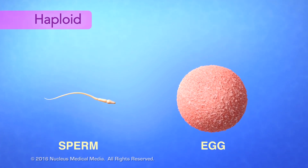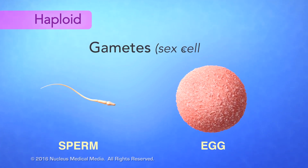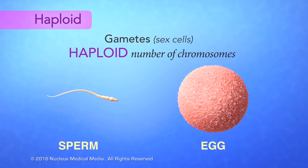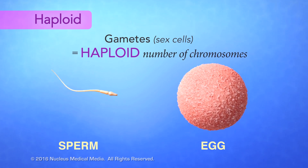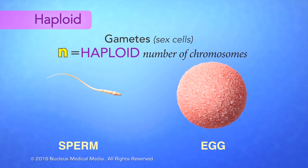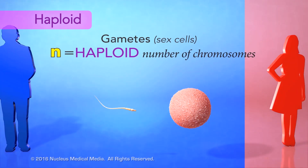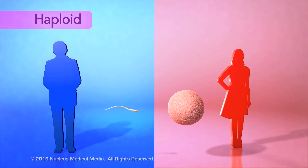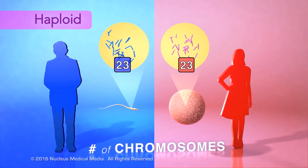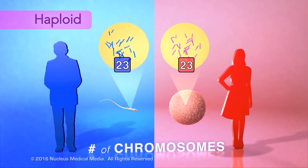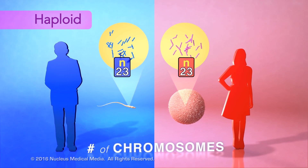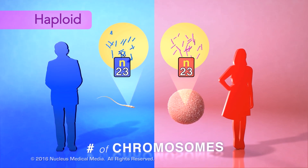In your body, sex cells called gametes have a haploid number of chromosomes, represented by the symbol N. In humans, every gamete has one set of 23 chromosomes, so the haploid, or N number in humans, is 23.